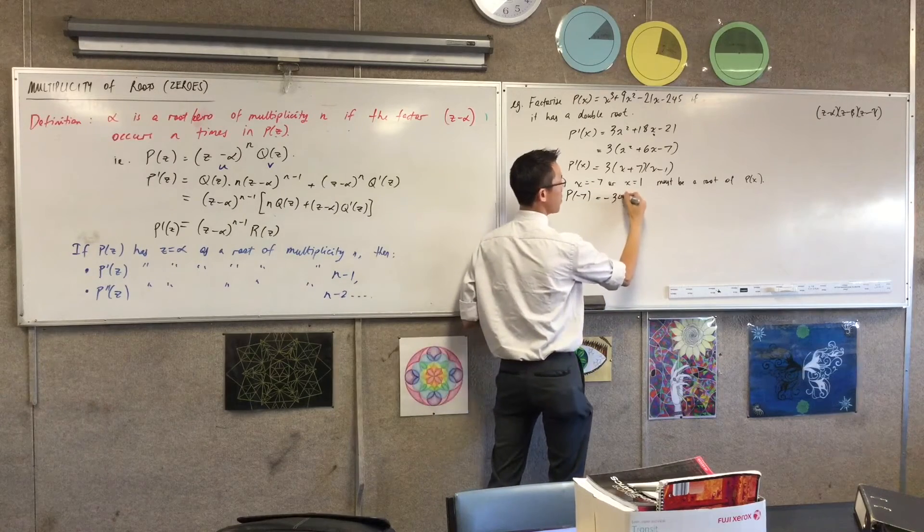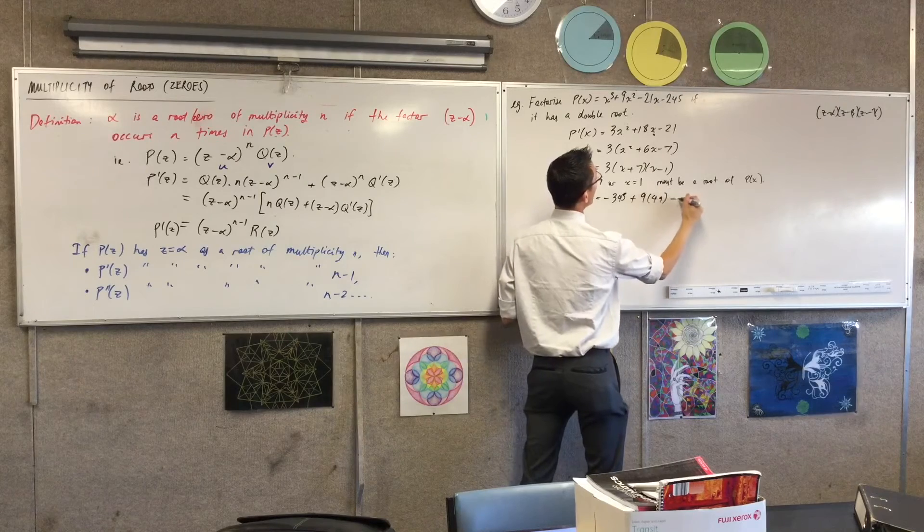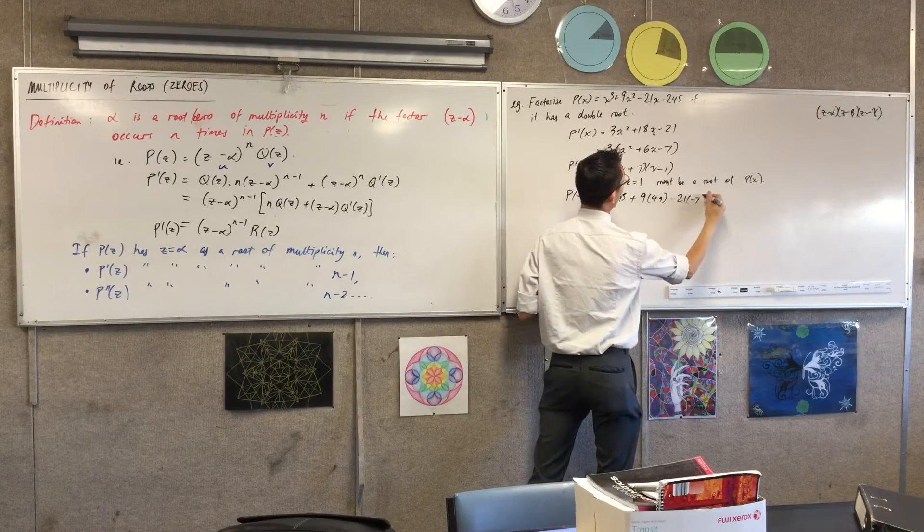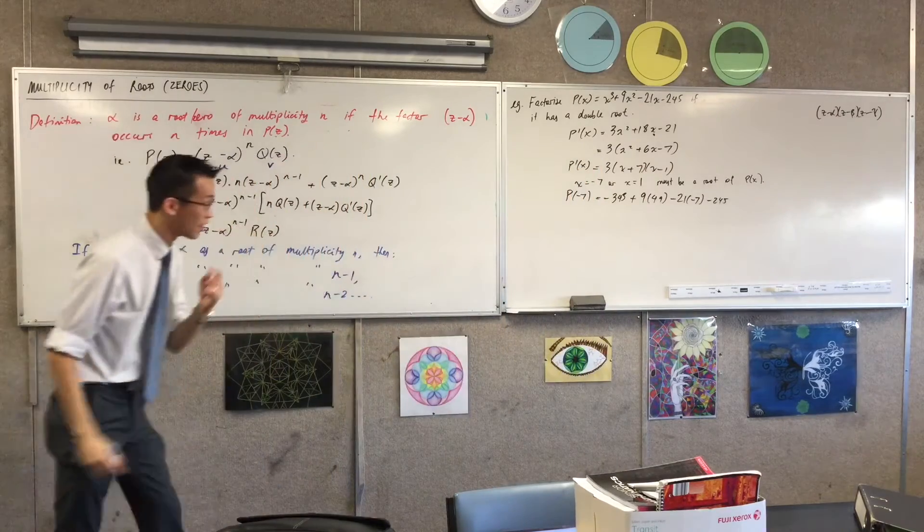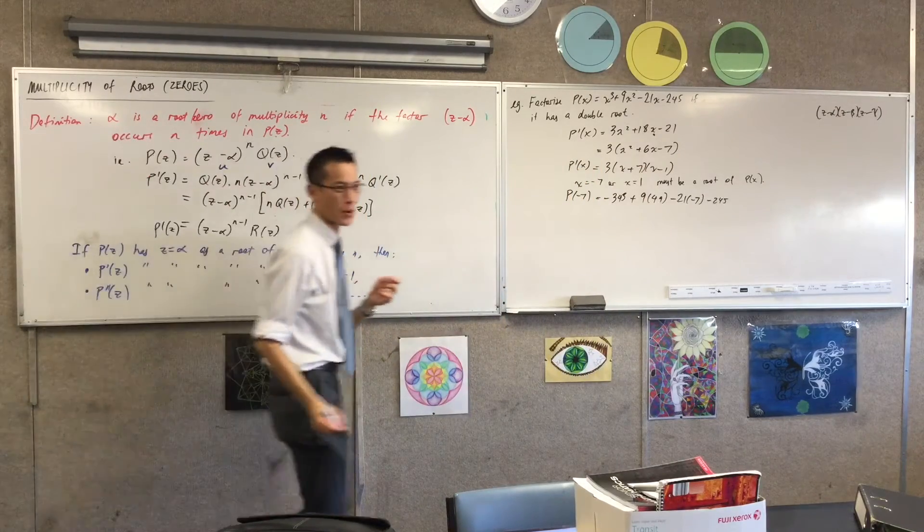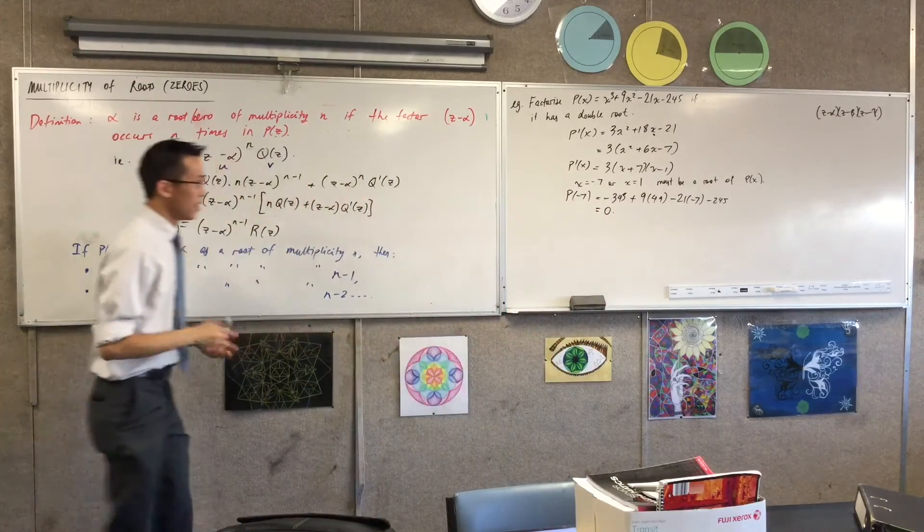This is going to be minus 343, plus 9 lots of 49, minus 21 lots of negative 7, minus 245. And you can go ahead, you can evaluate that. Pretty sure we're going to get to zero. Yep? Good.